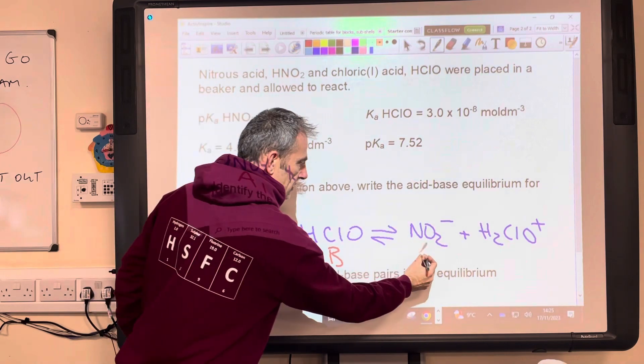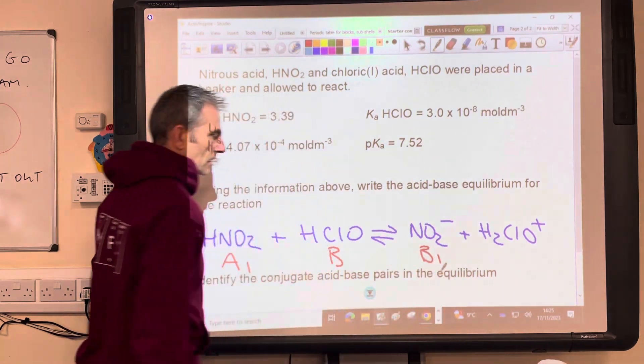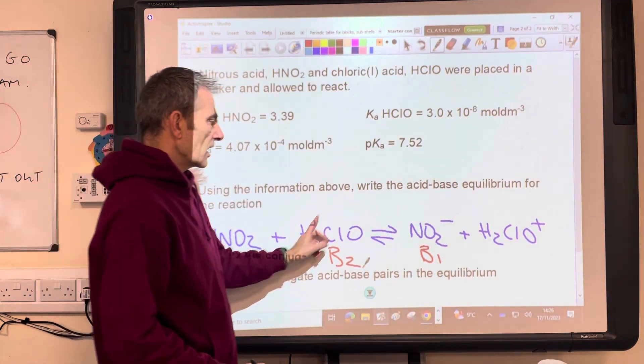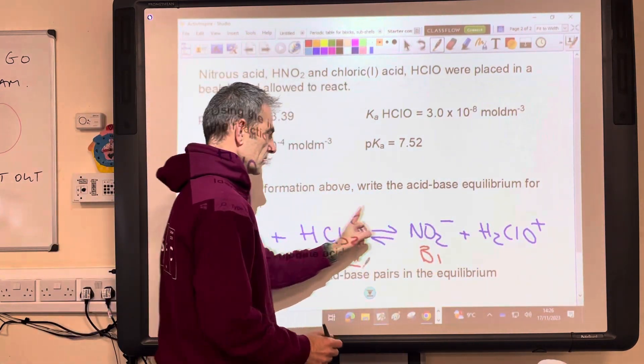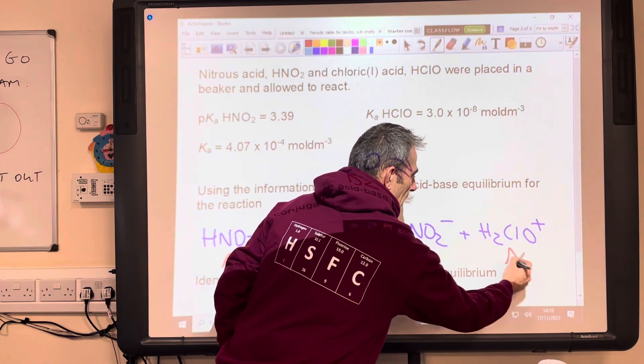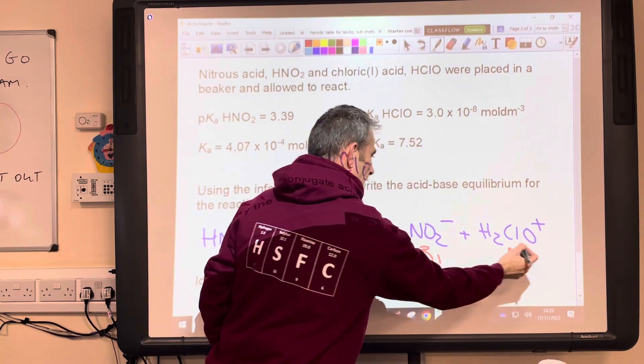So that is the base of pair 1 and this is obviously the base of pair 2. So it's conjugate acid and you can see the only difference between these two species is the proton. So this is an acid and that's from pair 2.